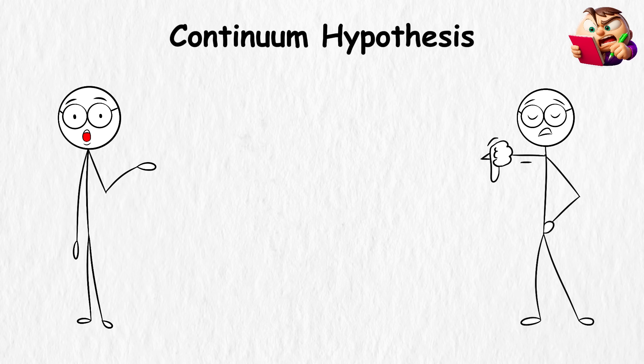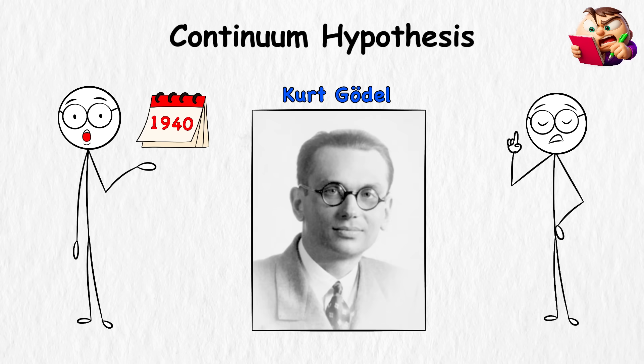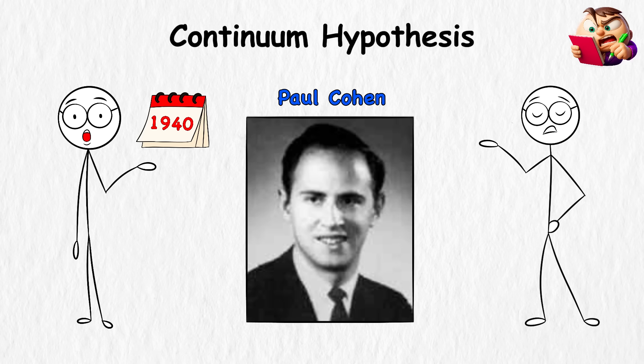But what followed wasn't a neat solution. In the 1940s, Kurt Gödel showed that math would stay consistent if you assumed the hypothesis was true. Decades later, Paul Cohen showed the same thing if you assumed it was false.